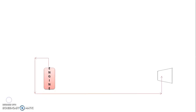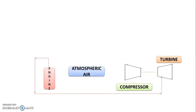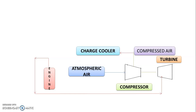In turbocharging, the engine exhaust is given to the turbine. This turbine and compressor are coupled together on the same shaft, so the turbine output is used to run the compressor. Whenever atmospheric air enters the compressor, it gets compressed to high pressure and high temperature. This compressed air then enters a charge cooler to maintain the temperature, and then this air enters into the engine. This is the working cycle for turbocharging.